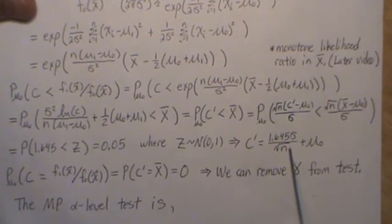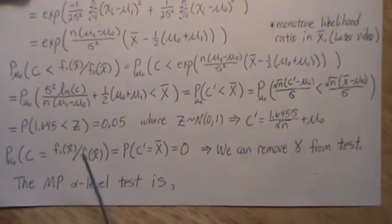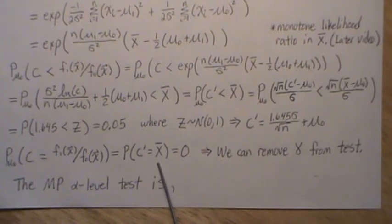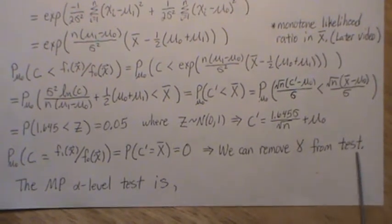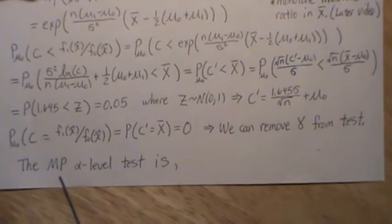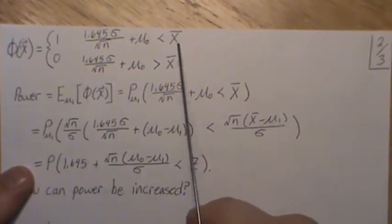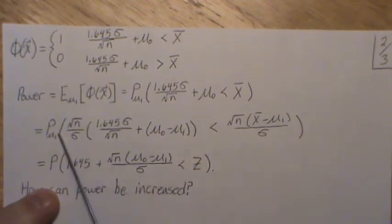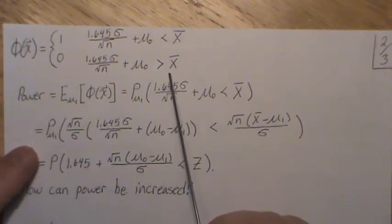We can then calculate the probability that c equals the likelihood ratio exactly. Since this is a continuous distribution, that probability is zero, so we can essentially remove gamma from our test function. The most powerful alpha level 0.05 test is: phi equals 1 or 0 — we reject H naught if x bar is greater than mu naught plus 1.645 times sigma over the square root of n. If x bar is less than this value, the data suggests we should not reject H naught.